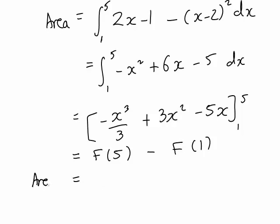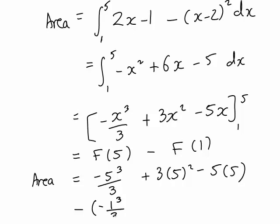Therefore the area between the curves is going to become negative 5 cubed over 3, and notice that minus sign is out the front, so it's basically minus 1 times 5 cubed, then plus 3 times 5 squared minus 5 times 5. Then from that we are subtracting the negative of 1 cubed divided by 3, plus 3 times 1 squared minus 5 times 1.